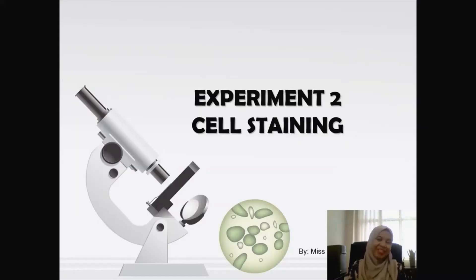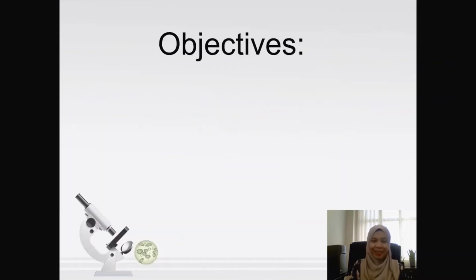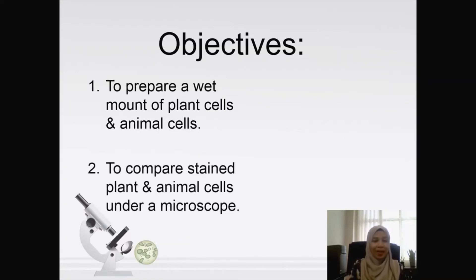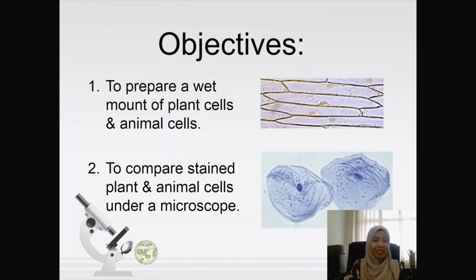Assalamualaikum and a very good day everyone. My name is Miss Nawala Mili binti Saidon and I'm going to give you a briefing on Experiment 2: Cell Staining. There are two objectives: to prepare a wet mount of plant cells and animal cells, and to compare the stained plant and animal cells under a microscope.